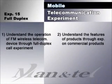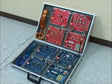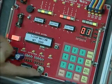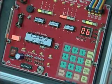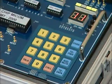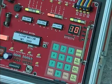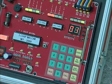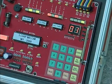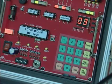Experiment 15 is about Full Duplex Experiment. Turn the power on both base station and the mobile station. Set to the auto mode. Call the other party by pressing the call button. On the bell ringing, press the talk button and start talking. Hello?